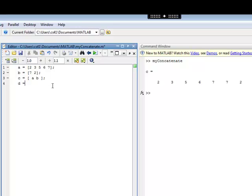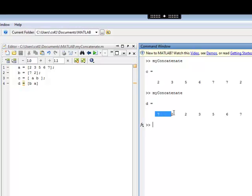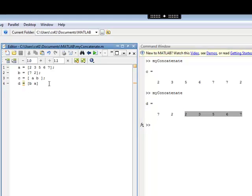We could do it in any order. So we could do B, A. And if I run that, now vector D has a 7 and a 2 here from vector B, and then the remaining elements are the elements from vector A. So you can concatenate it in any order.